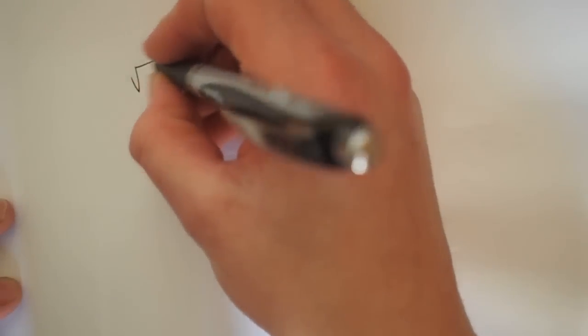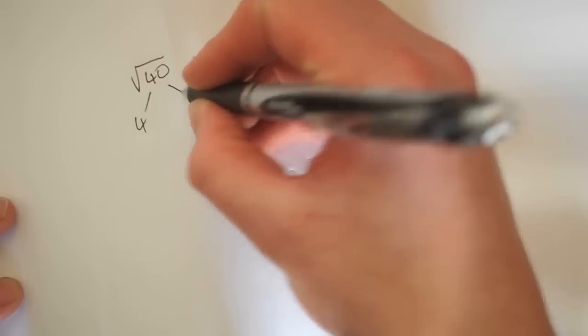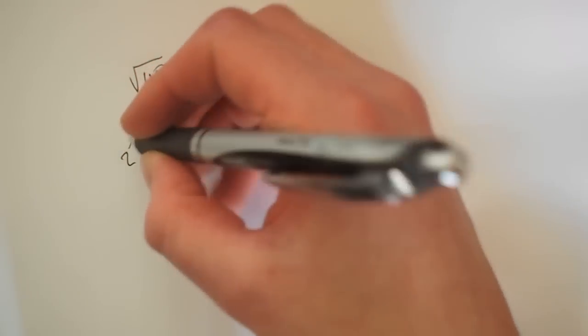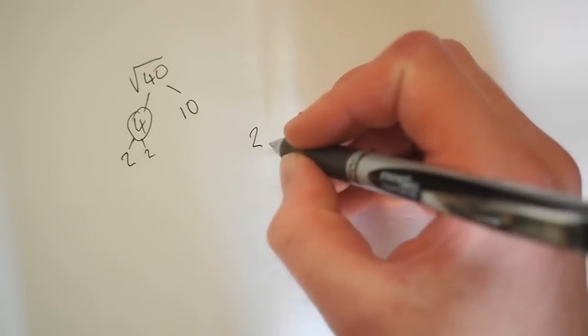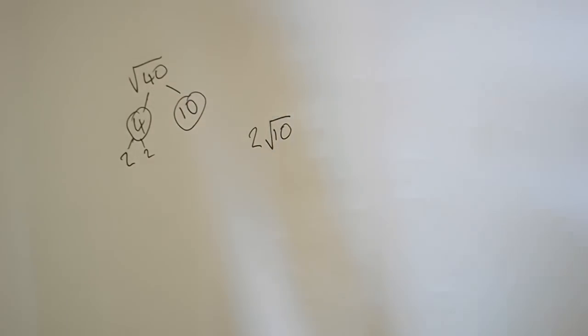Remember we did the square root of 40 and we found the factors of it. So of course we've got the 4 here which is a square number. That's square roots into a 2. And we can put this outside of the surd and then we're left with the 10. So 10 goes here.